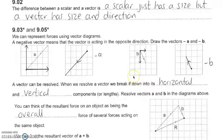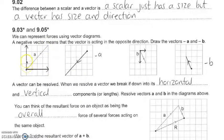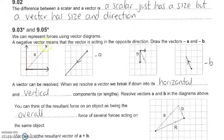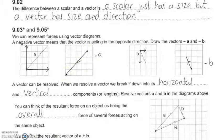We can represent vectors using vector diagrams. Looking at vector A, notice there's a horizontal component and a vertical component. If we connect up both ends of the arrow it will form a triangle. If we put a minus sign in front of vector A, the direction of the arrow goes in the opposite direction.